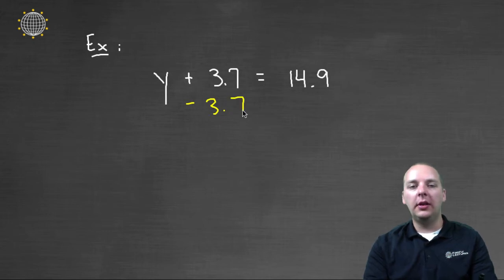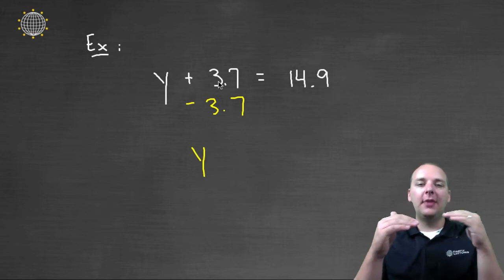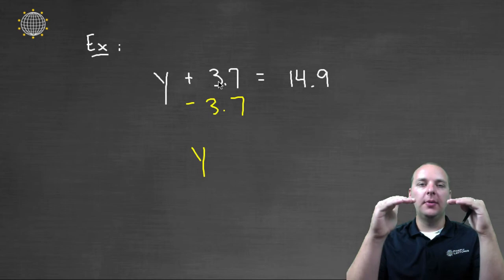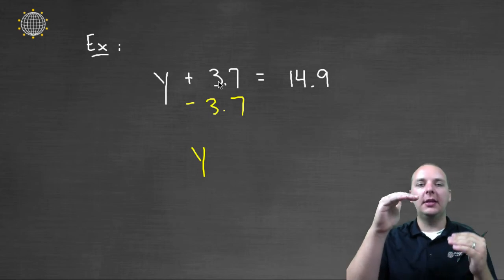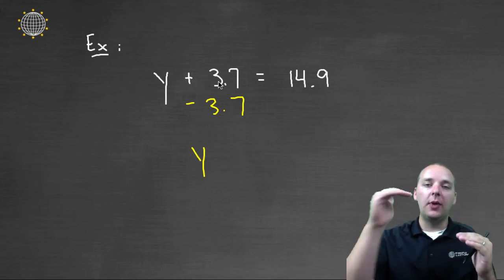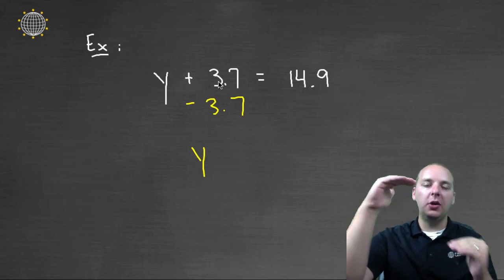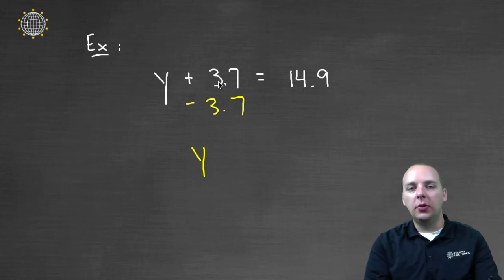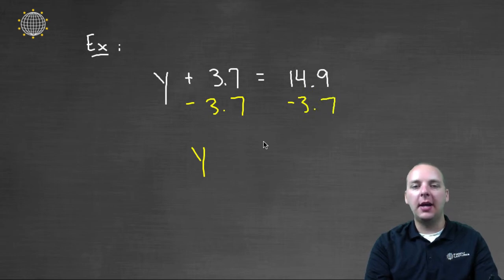then you can decrease the left hand side by three point seven. And that will lower the left hand side to where you would only have a Y on the left hand side. But again, if that original equality was here, if we decrease the left hand side by three point seven, but not the right hand side, you would not have equality anymore.